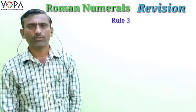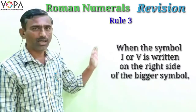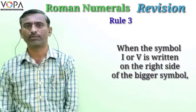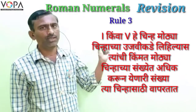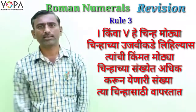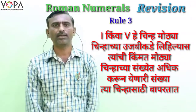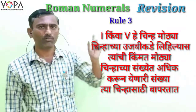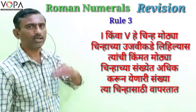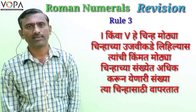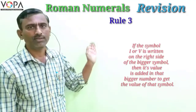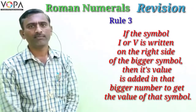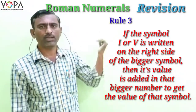In the third rule, when the symbol I or X is written on the right side of the bigger symbol, then its value is added to that symbol.